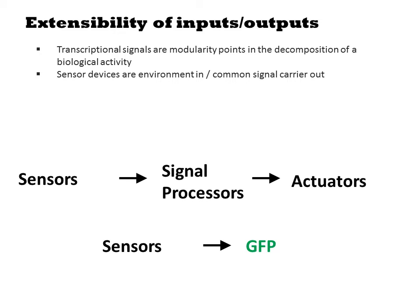We can categorize different devices in terms of whether they input or output transcriptional signals, and from this derive the potential combinations of devices into larger devices. A sensor is something that inputs an environmental signal and drives output expression in response. Inducible promoters are simple examples of sensor devices. You typically characterize the function of a sensor device by fusing it to GFP and monitoring fluorescence as some function of the environmental signal.